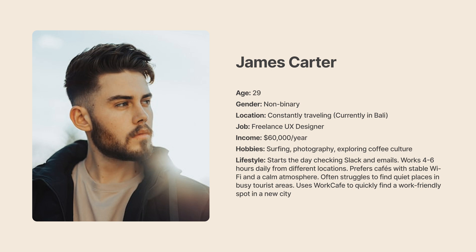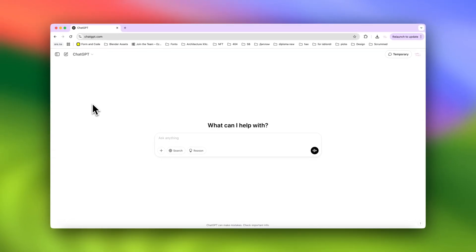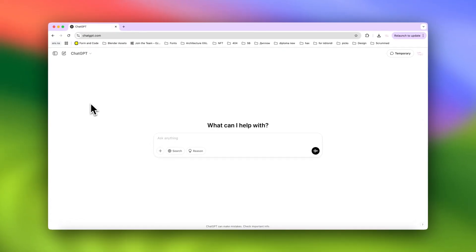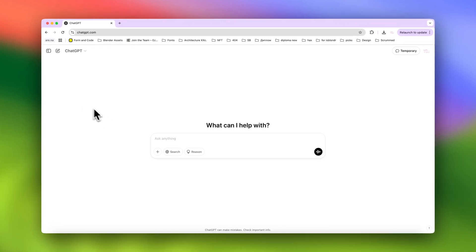James's hobbies would be surfing, photography, and exploring coffee culture. His lifestyle: starts the day by checking Slack and emails, works four to six hours daily from different locations, prefers cafes with stable wi-fi and a calm atmosphere, and often struggles to find quiet places in busy tourist areas. If you have difficulties writing personas, you can always ask ChatGPT to enrich them with more details.